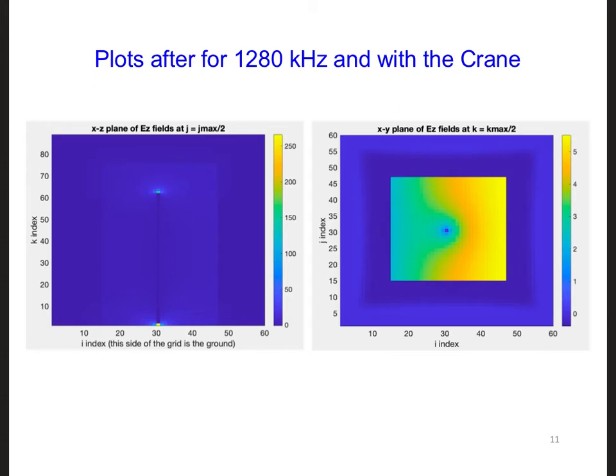Here are what my two plots look like after changing the frequency of the source and adding in the crane. Notice that we don't see as much of the sinusoidal wave propagating across the screen as we did in the last simulation. This is because we lowered the frequency, which lengthened the wavelength, but we kept Nmax the same.